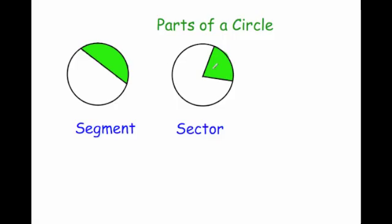And finally a sector — or as I like to call it, a pizza slice — is bound by two radii. So this radius and this radius, two of them. The plural of radius is radii. So two radii and an arc make up this green region, which is called a sector.